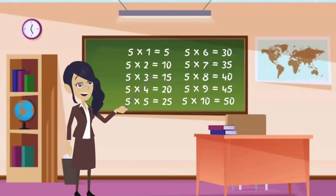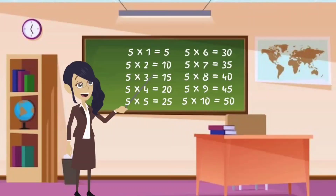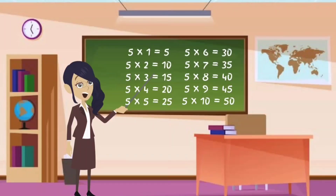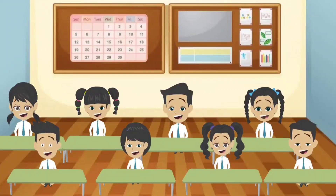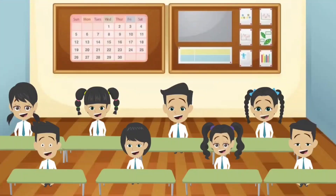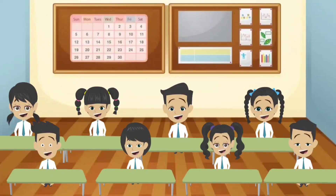Let's do this again together. 5 ones are 5. 5 twos are 10. 5 threes are 15. 5 fours are 20. 5 fives are 25. 5 sixes are 30. 5 sevens are 35. 5 eights are 40. 5 nines are 45. 5 tens are 50.